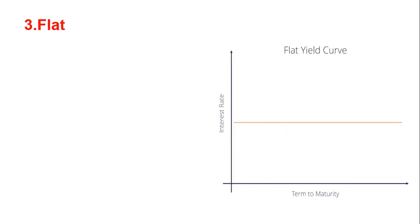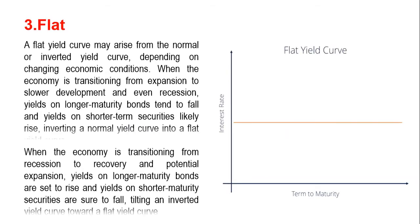A flat yield curve may arise from a normal or inverted yield curve depending on changing economic conditions. When the economy is transitioning from expansion to slower development and even recession, yields on longer maturity bonds tend to fall and yields on shorter-term securities likely rise, inverting a normal yield curve into a flat yield curve. When the economy is transitioning from recession to recovery and potential expansion, yields on longer maturity bonds are said to rise and yields on shorter maturity securities are set to fall.